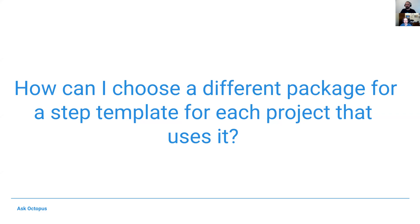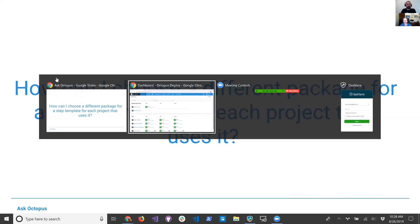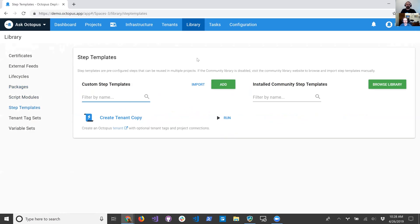Hopefully it will make sense — it's a bit of a mouthful. But the question is: how can I choose a different package for a step template for each project that uses it? So I have a step template, I want it to accept a package and do something with that package, but I want it to be a different package per project. Have you come across this? Yeah, I have, actually. I think a couple of step templates I've written recently deal with something like that. I know exactly which ones you're talking about, and I've had a customer ask me about this.